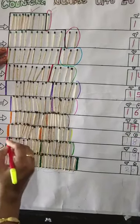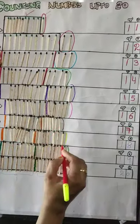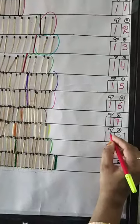Here 1 10 and 8 loose magic sticks representing 18.